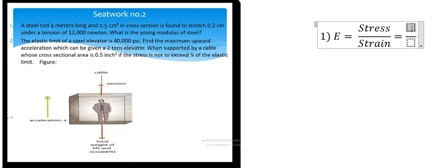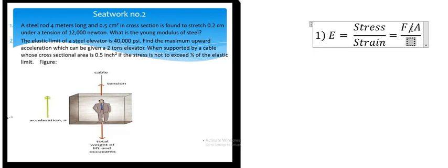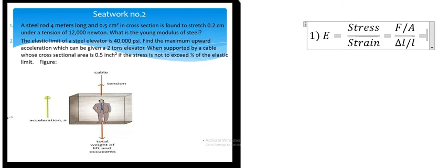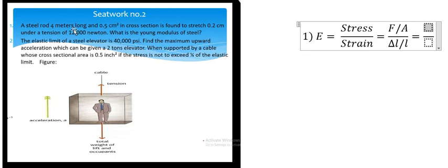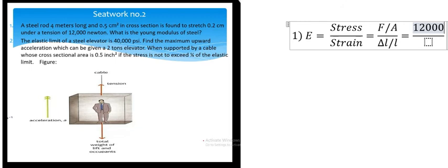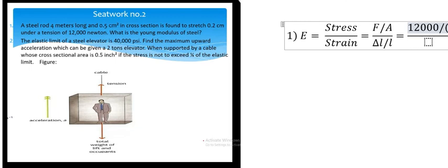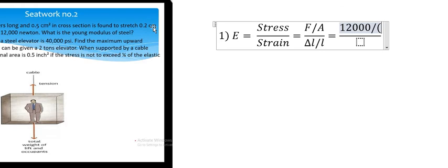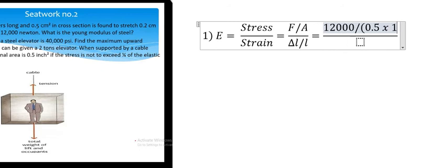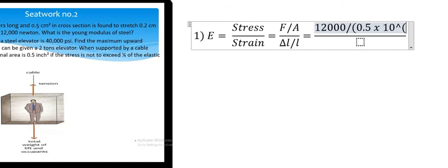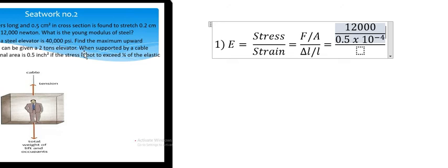For stress we have F divided by A, and for strain we have delta L divided by L. For the force we have 12,000 newtons, and for the area we have 0.5 square centimeters. Because this is in centimeters we need to convert to meters, so we multiply by 10 to the power of minus 4.